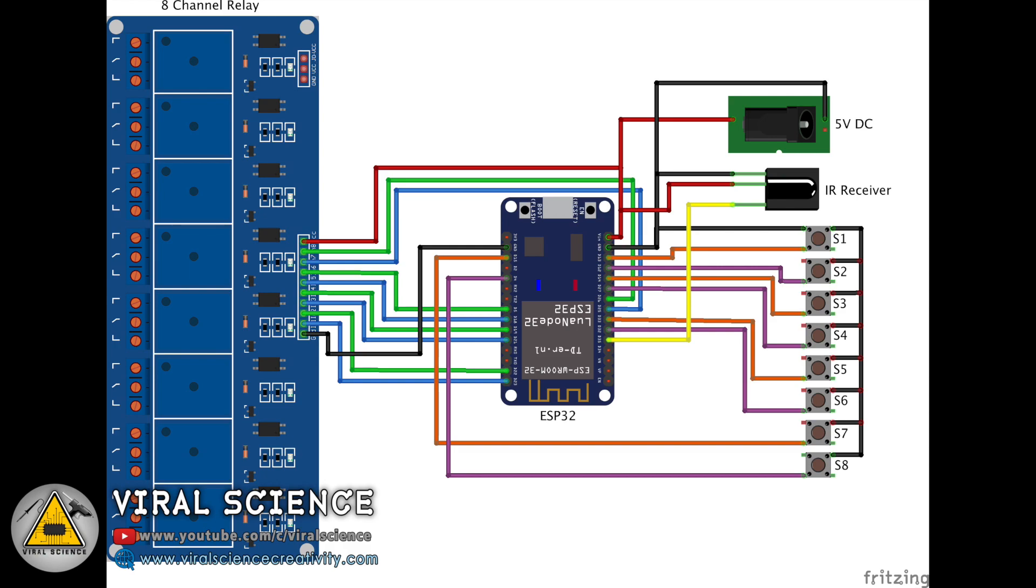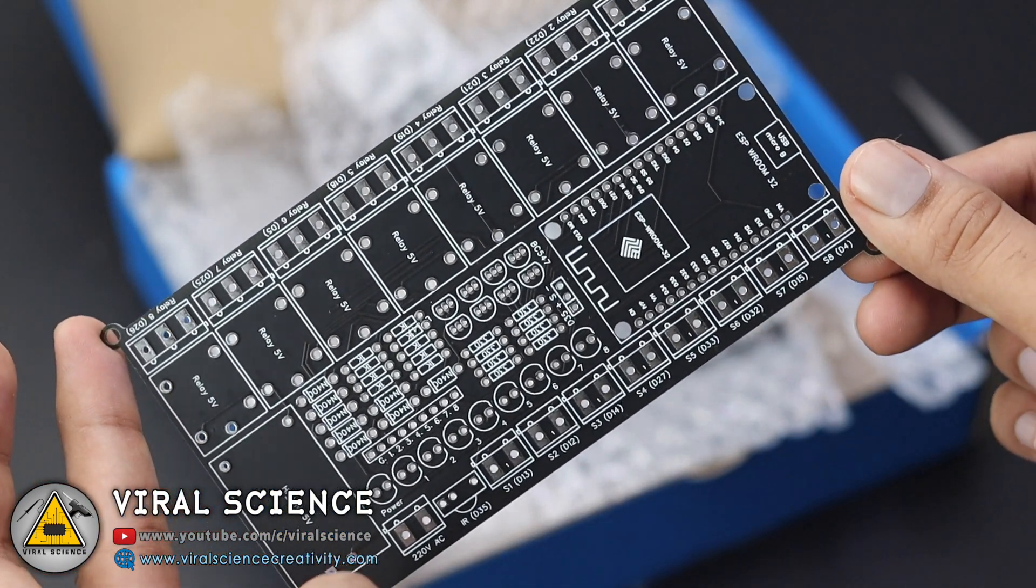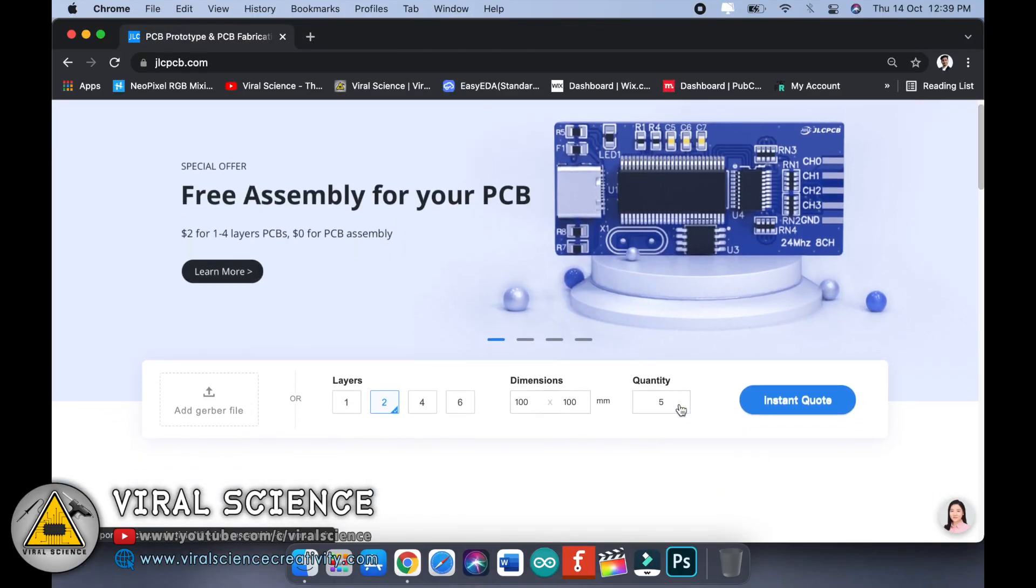Now follow the circuit diagram if you are using off-the-shelf components like 8-channel relay module, ESP32 board, push buttons, IR receiver. But I will be using my personal design PCB for this project.